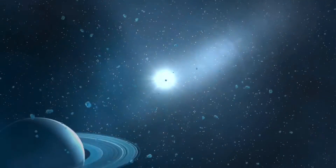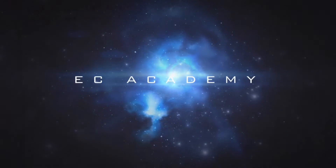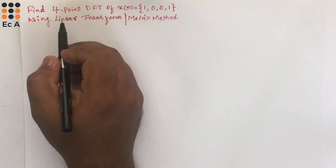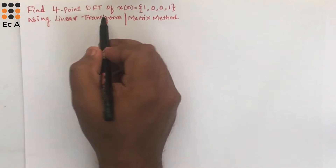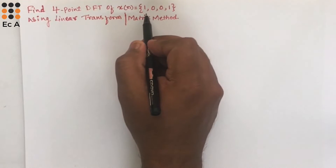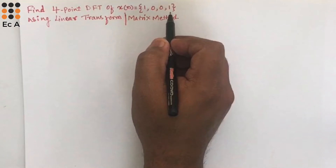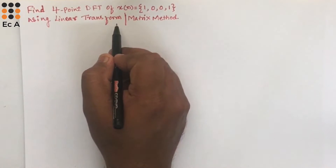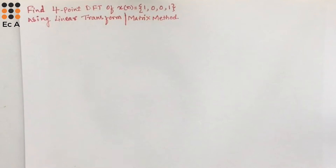Hello friends, welcome to EC Academy. In this lecture, let us understand how to find a 4-point DFT of the sequence x[n] = {1, 0, 0, 1} using linear transformation, which is also the matrix method.